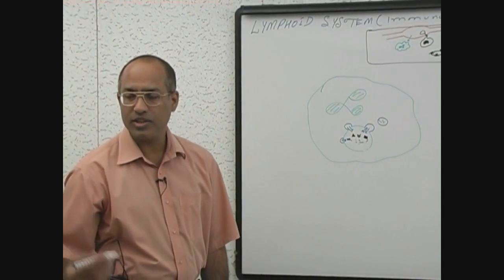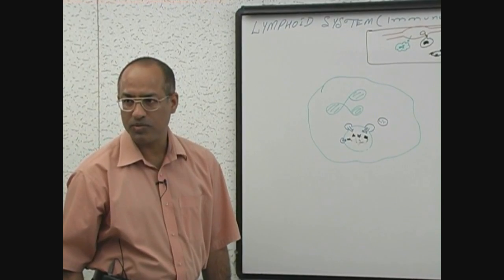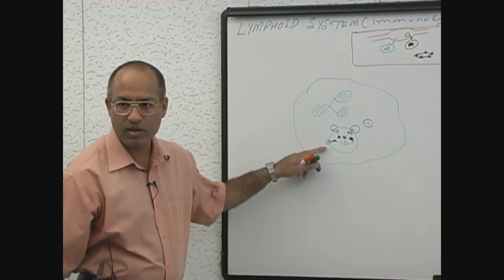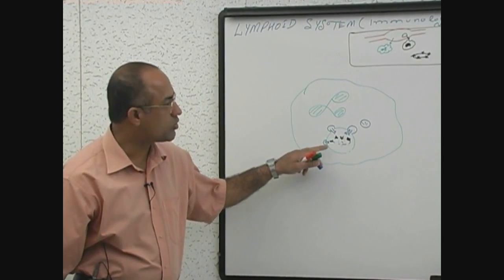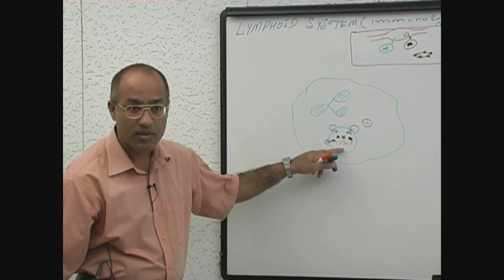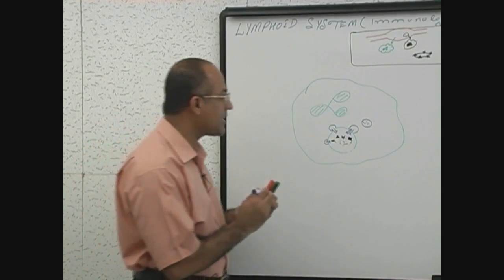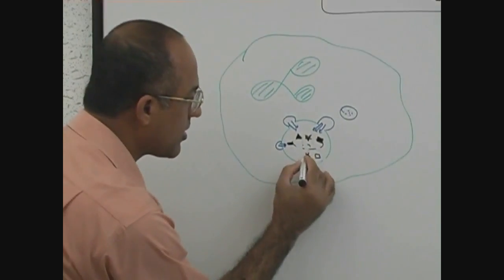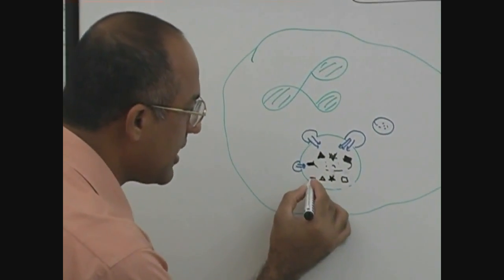Then oxygen-derived radicals are also produced. So multiple destructive products are released by the neutrophil into the phagosome, so that bacteria is attacked by this product and bacterial antigens are now free. These are bacterial antigens and what will happen?